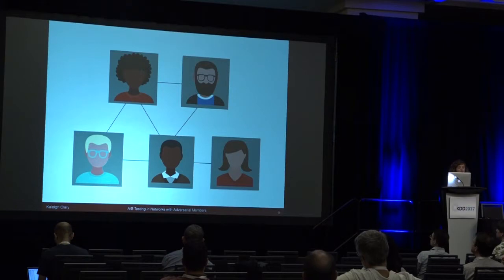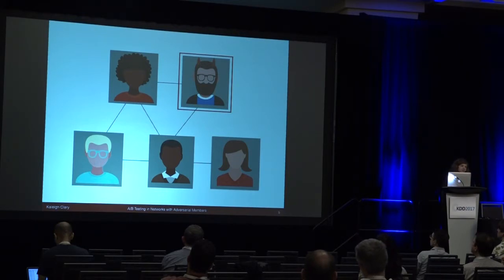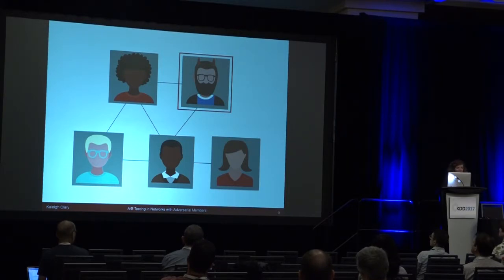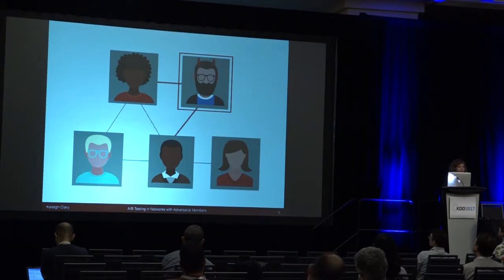Here's our network. Suppose this person works for a competitor. They see this green screen and know about experimentation in social network platforms and think they can manipulate something. They decide to stop using the app, which means their friends are not using it as often either. So this one motivated individual can affect the outcome of their friends by making this observation about the experiment.